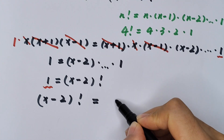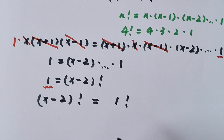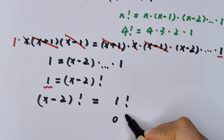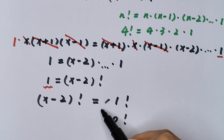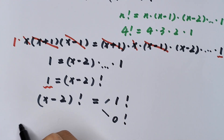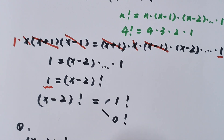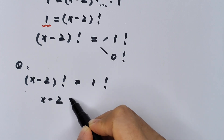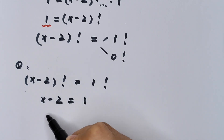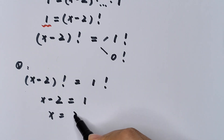So (x - 2)! = 1. Since 1! = 1, we have x - 2 = 1, therefore x = 3.